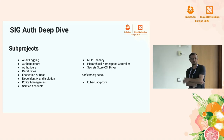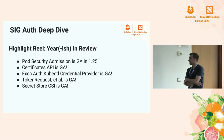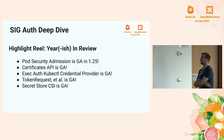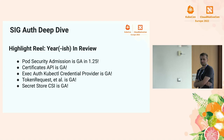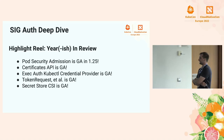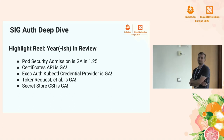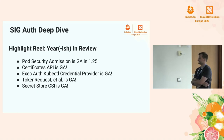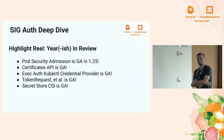Looking at what we've done in the last year and a half: Pod Security Admission is GA in 1.25, the upcoming release, and we merged a PR to delete Pod Security Policy from the Kubernetes codebase. The Certificates API went GA with new features including signer partitioning. The exec auth plugin credential providers for kubectl are now GA. Token Request is GA, and the Secret Store CSI driver is GA.